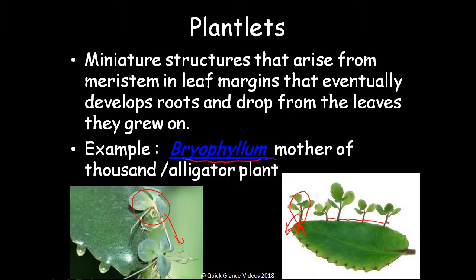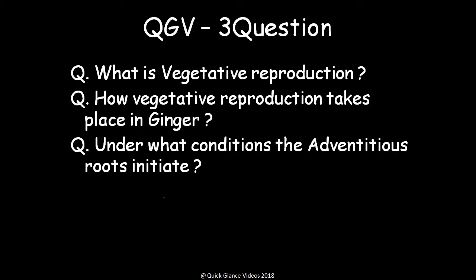In both videos, we have covered almost all types of vegetative reproduction with brief explanations and examples that you can remember for exams. It is not a detailed explanation but a brief overview so you can remember the basic concepts. Three quick-glance questions: What is vegetative reproduction? How does vegetative reproduction take place in ginger? Under what condition do adventitious roots initiate? You can answer these in the comment area. Keep watching Quick Glance videos for more topics. Thank you.